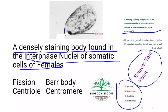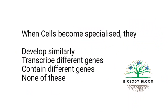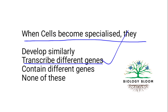That is known as Barr body — B-A-R-R — Barr body. It is densely staining. So what is Barr body? It is the inactive X chromosome of mammals. When cells become specialized, they transcribe different genes — they differentiate into different tissues and organs.